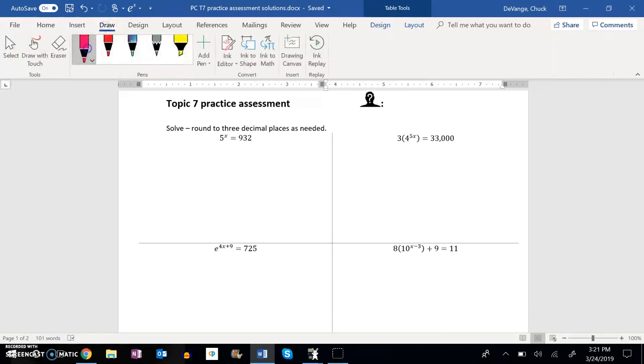So this is the practice assessment for topic 7, and let's do this first problem here: 5 to the x equals 932. I notice that I can rewrite this as log base 5 of 932 is equal to x.